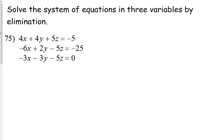So what I see right now looking at number 75, what do y'all see that lends itself to elimination? The z, right? Because we've got positive 5z in the first one and we have negative 5z in the second two.